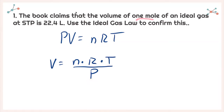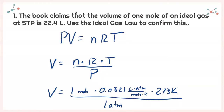I'm told I'm at 1 mole. I need to choose an R value that matches the units so they can all cancel out. I chose R = 0.0821 L·atm/(mol·K). Plugging in: 1 mole × 0.0821 × 273 K, all divided by 1 atmosphere. I chose this R specifically because I am working in atmospheres. Plugging all that into my calculator I get a volume of 22.4 liters — exactly what the book tells me.